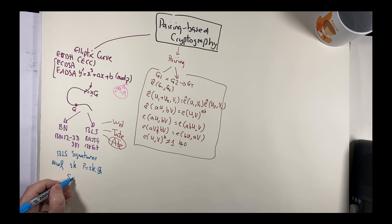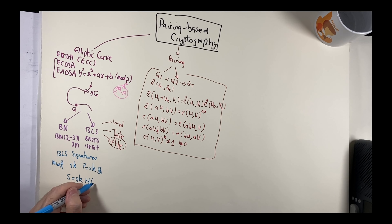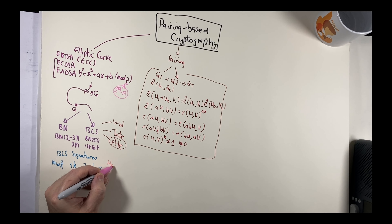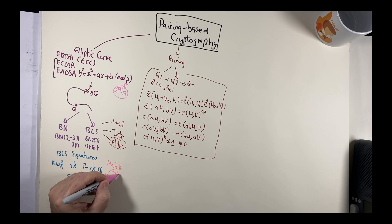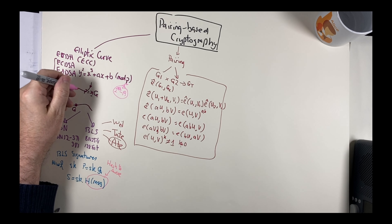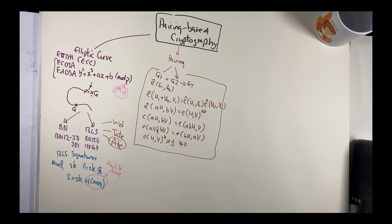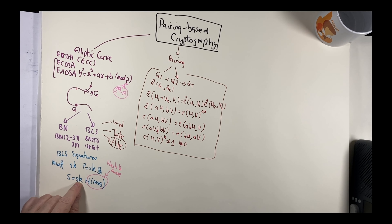Creating the signature is simple: Alice takes her secret key SK and multiplies it by the hash of the message she wants to send. There is a special function called hash-to-curve, which takes the message and uses a special mapping function to map it onto an elliptic curve point. Alice then multiplies SK by this curve point to produce the signature.